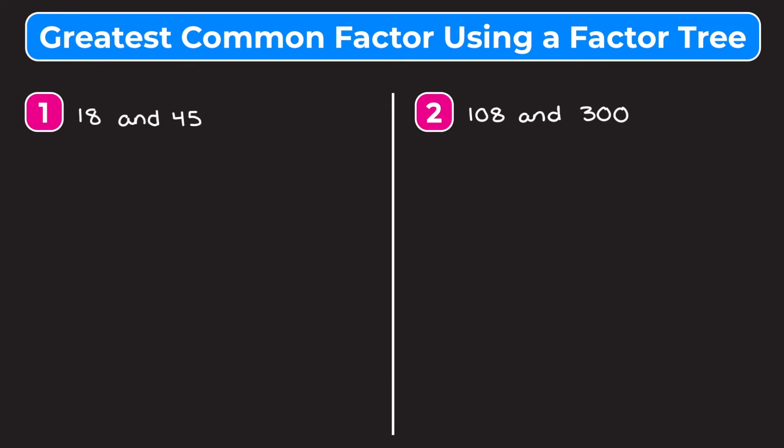In this video, we're going to learn how to find the greatest common factor of two or three numbers using a factor tree. Just a quick reminder that the greatest common factor between two numbers is the greatest number that can divide into both numbers evenly.